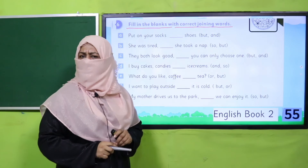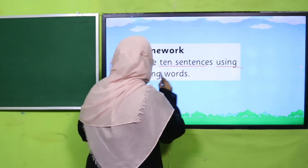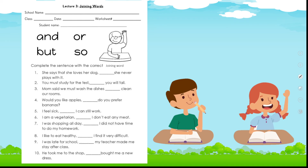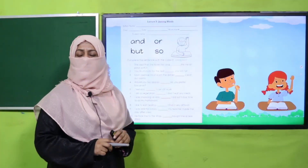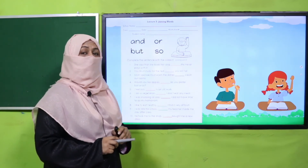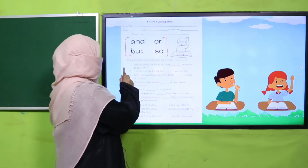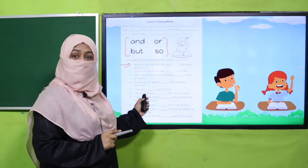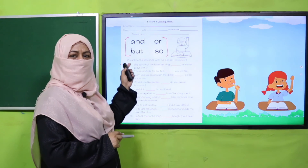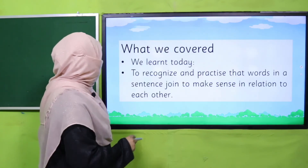Are you done? Good job! Now it's time for your homework — you will write 10 sentences using joining words. I'm also giving you a worksheet. My dear fellow teachers, the worksheet, lesson plan, and PowerPoint presentation links are given; click, download, and provide a printed worksheet to students for practice. Students, there are four joining words given — choose the correct one to fill in the blanks for each sentence. Recall all the rules for where to use 'and,' 'but,' 'or,' and 'so.'